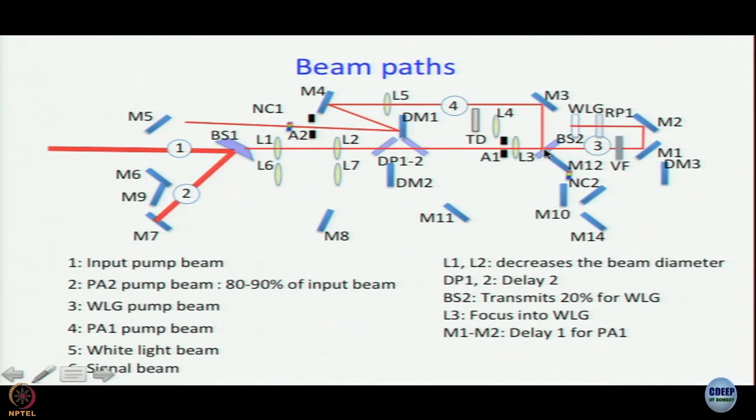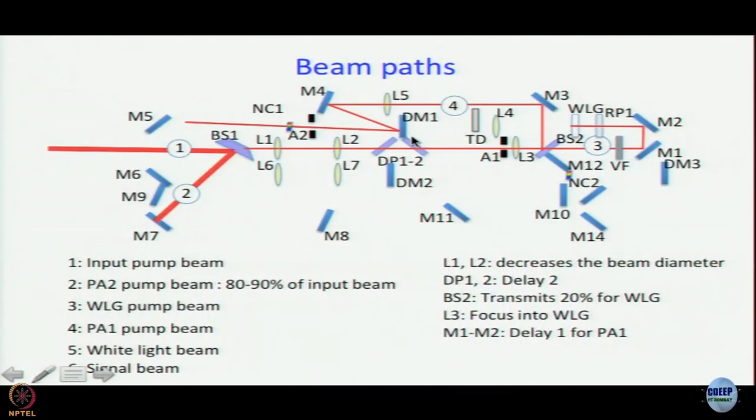What we said is the 80 percent of the light that is reflected by BS2 hits M3, that is path 4 which is PA1 pump beam, the preamplifier pump beam, and remember this is a focusing beam. So it is collected by L5 which serves to collimate it, then the collimated beam hits M4 then dichroic mirror 1. As we discussed in the previous module, this dichroic mirror is essentially a short pass filter, so it reflects the 800 nanometer light. This 800 nanometer light goes through an aperture A2 and this nonlinear crystal NC1, and then it is dumped.